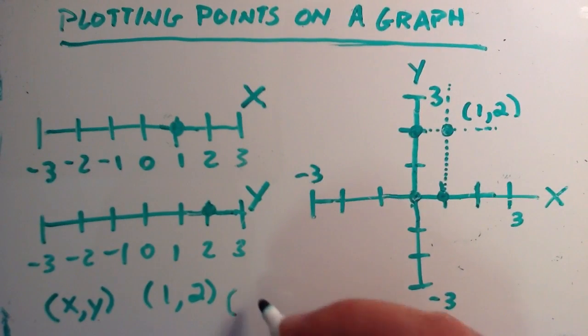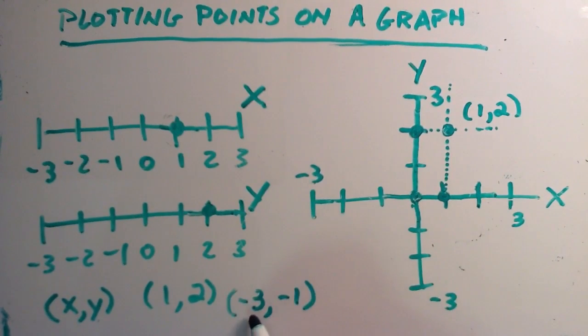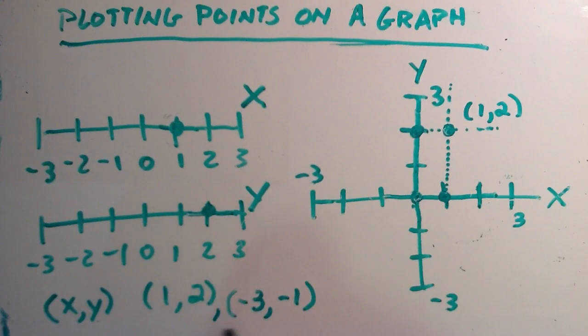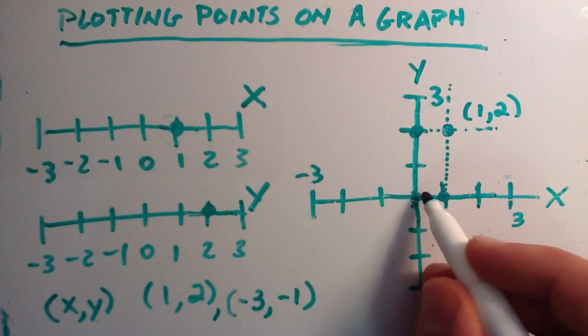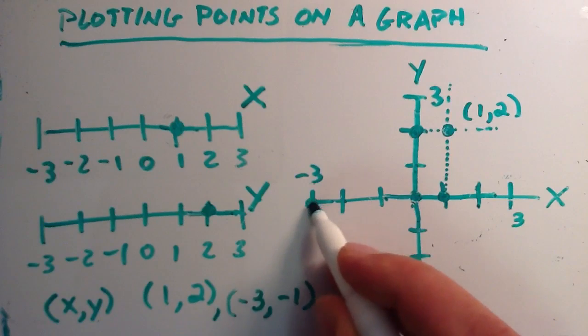So let's try (-3, -1). So negative 3 is the first number, so therefore it represents x, because x always comes first in these ordered pairs. So we start at 0, and then on the x axis we count negative 1, negative 2, negative 3, right here.